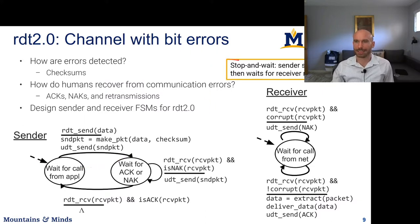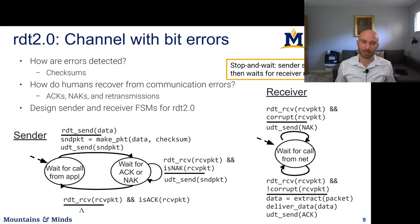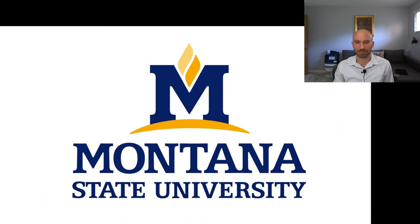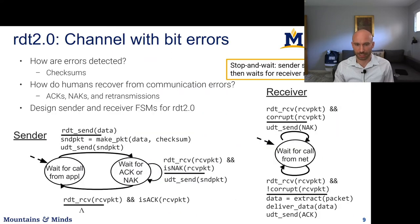We can describe RDT 2.0 as a stop-and-wait protocol — we send one packet at a time and wait for a response, either an ACK or NAK, before sending more. This is very inefficient. Ideally, we would send multiple packets at a time, receiving acknowledgements as we're sending, so that both the sender-to-receiver and receiver-to-sender channels are fully utilized. TCP will end up doing exactly that as we build up the complexity of the protocol.